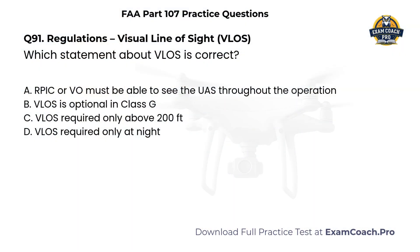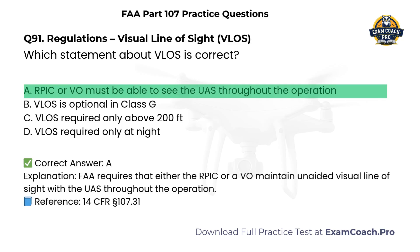Regulations. Visual line of sight. Which statement about visual line of sight is correct? A. Remote PIC or visual observer must be able to see the UAS throughout the operation. B. Visual line of sight is optional in Class G. C. Visual line of sight is required only above 200 feet. D. Visual line of sight is required only at night. Correct answer: A. FAA requires that either the remote PIC or a visual observer maintain unaided visual line of sight with the UAS throughout the operation.